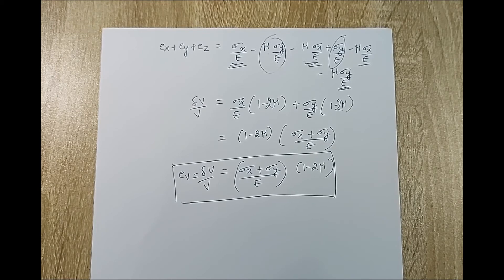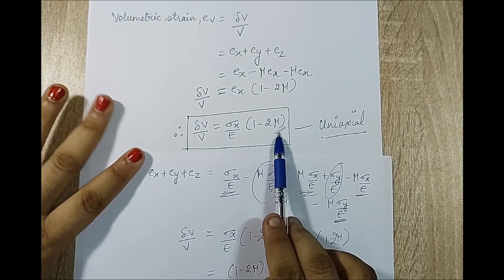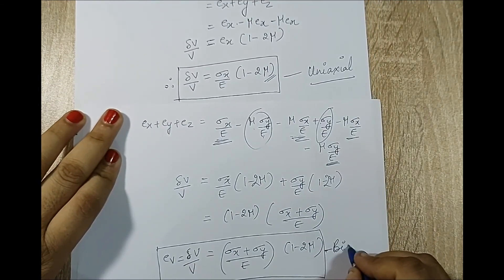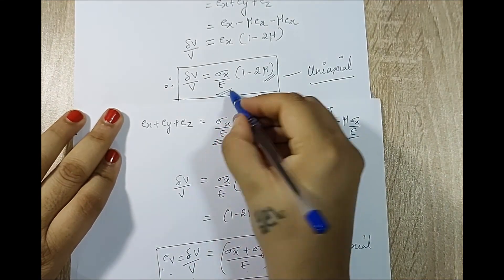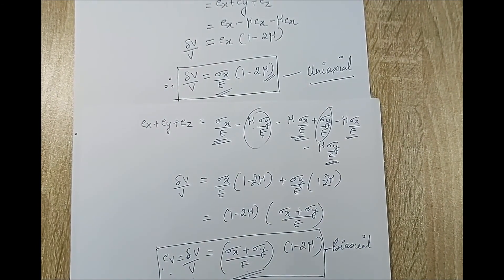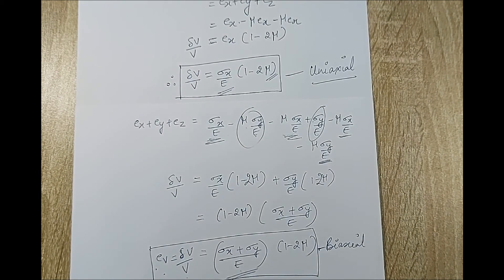Comparing with the uniaxial result where δV/V = sigma x/E · (1 − 2μ), for biaxial loading Ev = (sigma x + sigma y)/E · (1 − 2μ) — you can observe that instead of one stress you now have a summation of two stresses. With this I conclude this session; in the next session I will show the derivation for triaxial loading. Please write any doubts or numerical requests in the comments, like, share and subscribe, and I will see you in the next session.